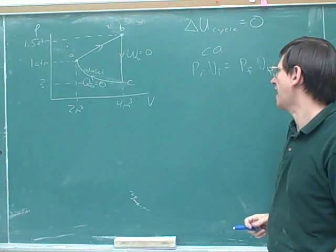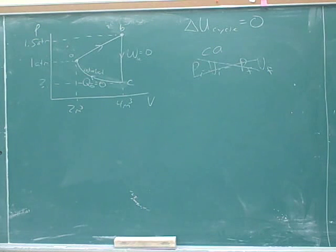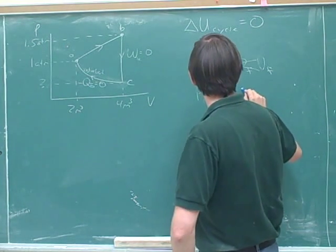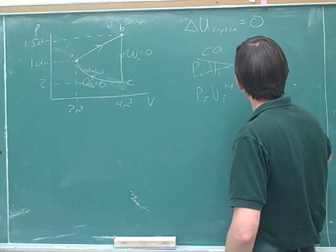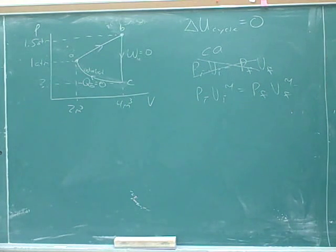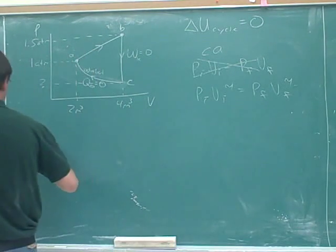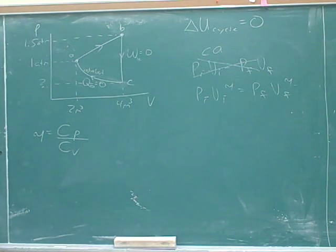But we're definitely on the right track — this is just not this precise equation. We could use P_initial times V_initial raised to gamma equals P_final times V_final raised to gamma. And we know that gamma equals C_P over C_V. That's right — now we're on the right track.